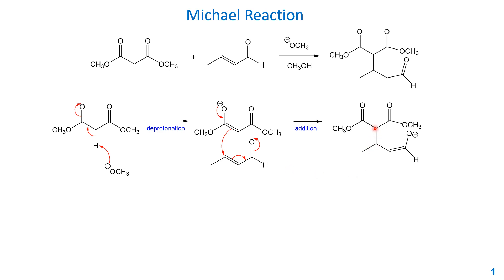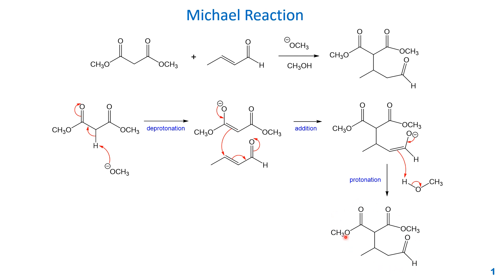You can also call it a 1,4-addition to this alpha-beta unsaturated carbonyl, or a conjugate addition. You form this carbon-carbon bond as a new bond here. You can also see an enolate is formed here. The next step is just protonation of this enolate — the electron pushes back, attacks the proton, and pushes the sigma electron back to oxygen to reform the methoxide as the base. So this base is actually the catalyst. Protonation gives you the final neutral product with the newly formed carbon-carbon bond.